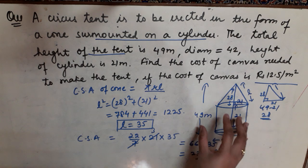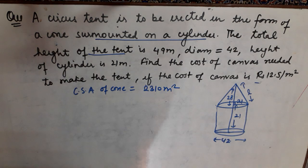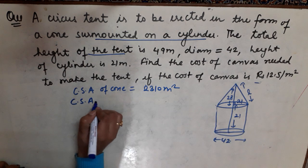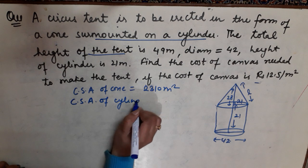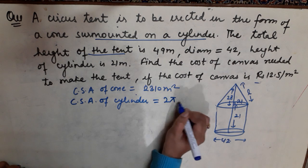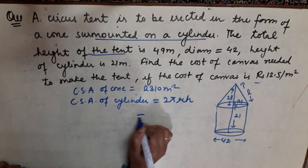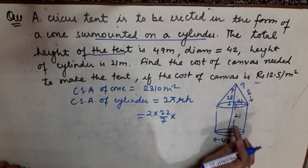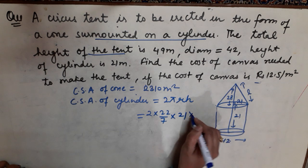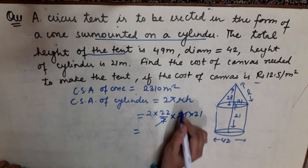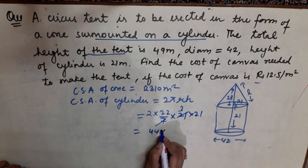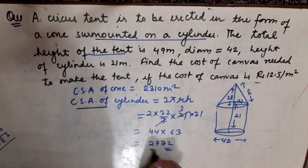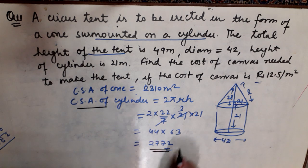Next, find the curved surface area of the cylinder. Curved surface area of cylinder = 2πRH = 2 × (22/7) × 21 × 21. Cancelling, this gives 44 × 63 = 2772 meter square. So the curved surface area of the cylinder is 2772 m².